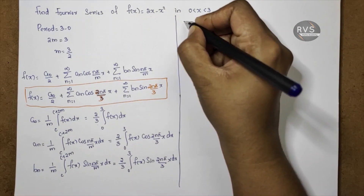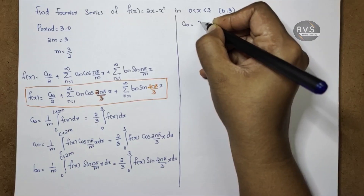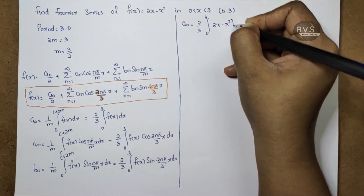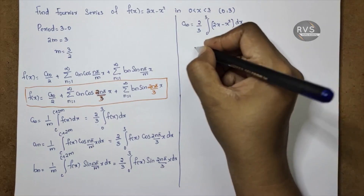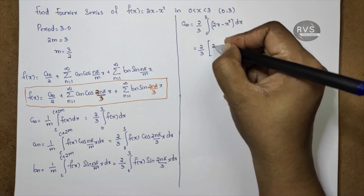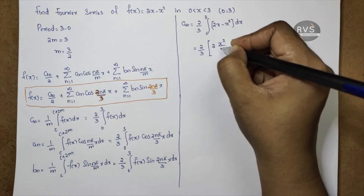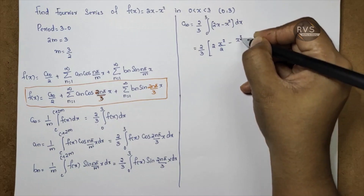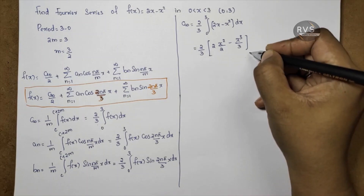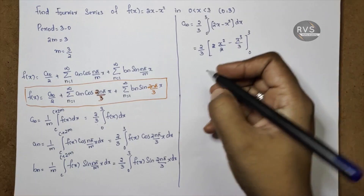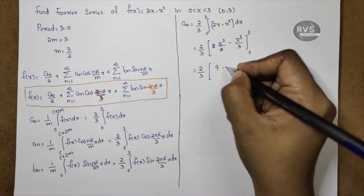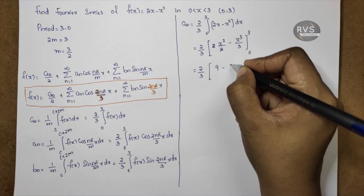To find a0: a0 is equal to 2 by 3 into the integral from 0 to 3 of F of x dx, where F of x is 2x minus x squared. So the integral of 2x minus x squared dx gives x squared minus x cubed by 3, with the limit from 0 to 3. The upper limit gives 9 minus 9, which equals 0.